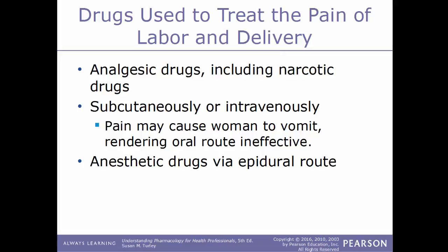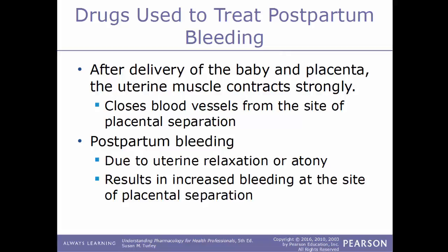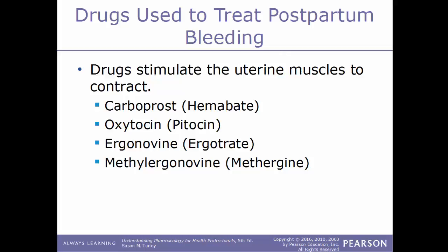After delivery of the baby and placenta, the uterine muscles contract strongly to close blood vessels from the site of placental separation. Postpartum bleeding can be due to uterine relaxation or uterine atony — the lack of tone of the muscle — resulting in increased bleeding. Drugs that treat postpartum bleeding stimulate the uterine muscles to contract. Examples include carboprost (Hemabate), oxytocin (Pitocin), ergonovine (Ergotrate), and methylergonovine (Methergine).